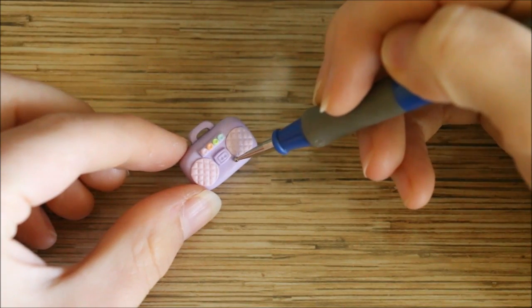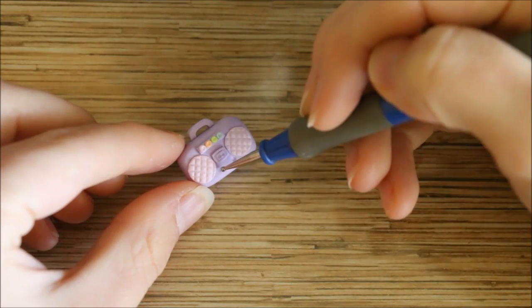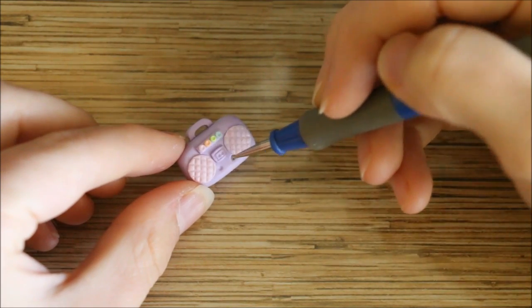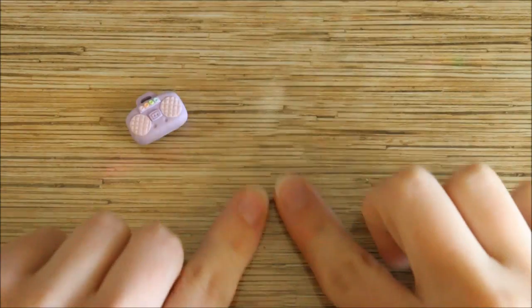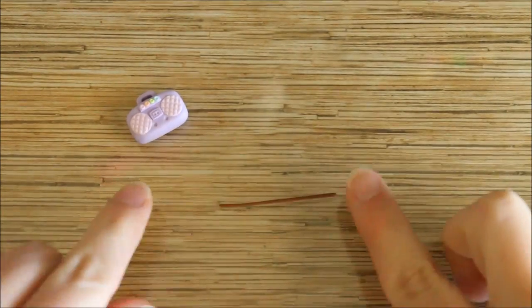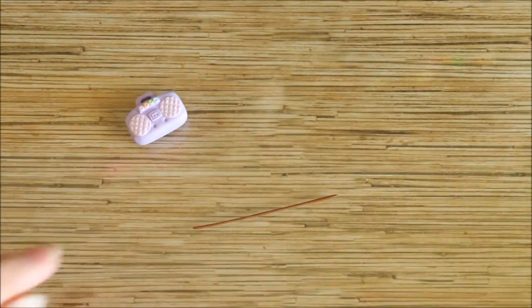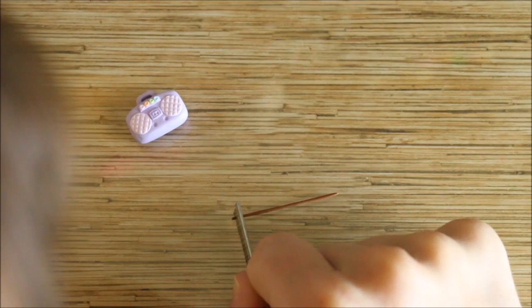Now moving on to the face, I created two indents where I wanted the eyes to go. I then took two balls of brown clay and placed them inside, and then also indented those as well.